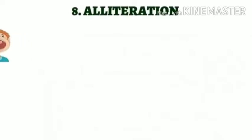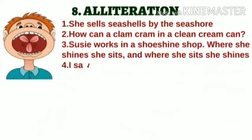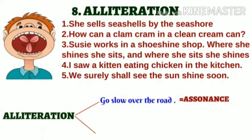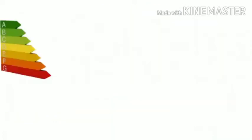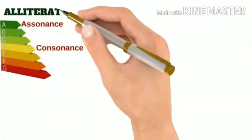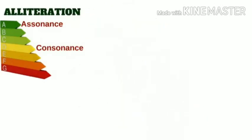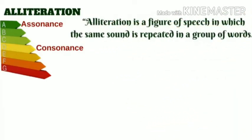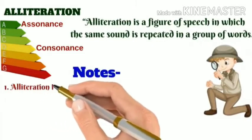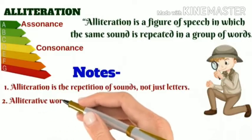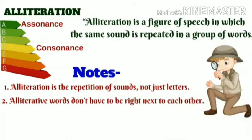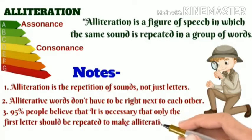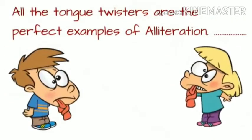Alliteration. All the tongue twister examples are perfect examples of alliteration. If a vowel sound is being repeated, the figure of speech is assonance. If a consonant sound is being repeated, it is consonance. So assonance and consonance are both parts of alliteration. Alliteration is a figure of speech in which the same sound is repeated in a group of words. You need to pay special attention that alliteration is the repetition of sounds, not just letters, and alliteration words don't have to be right next to each other.